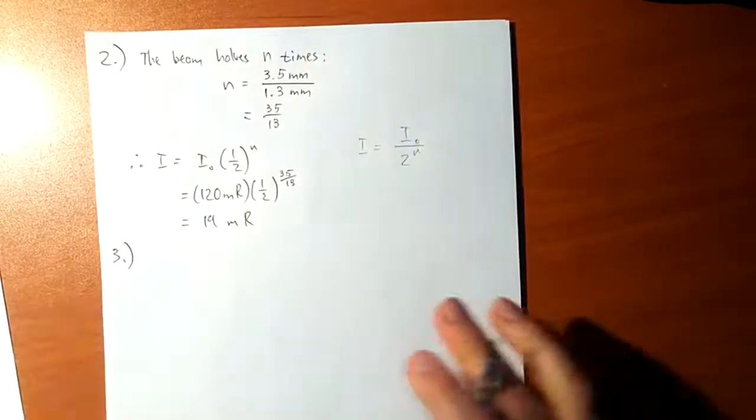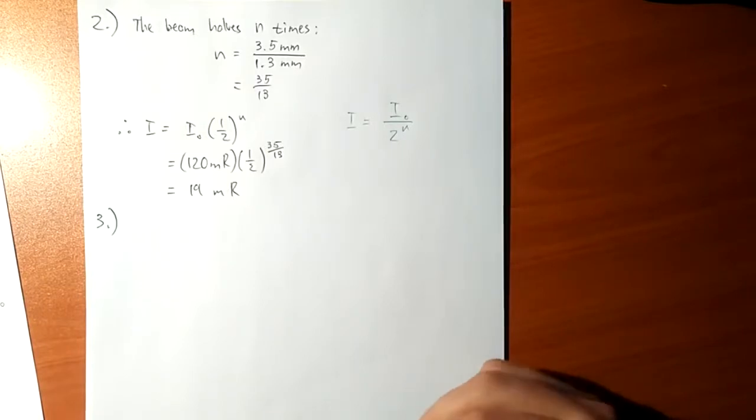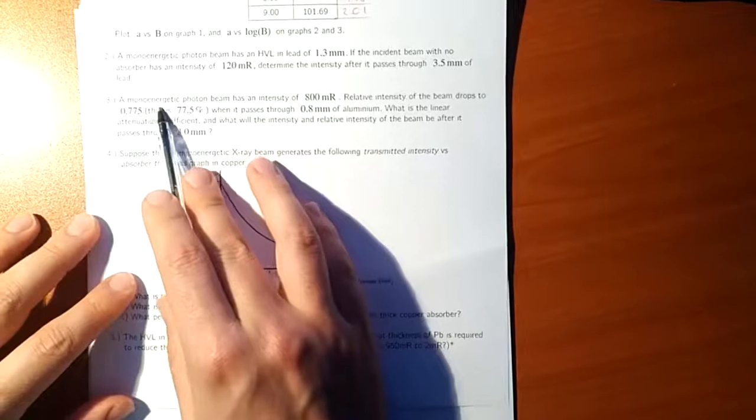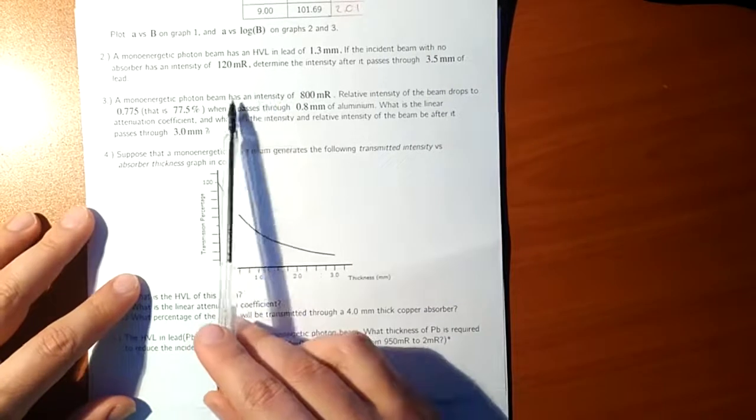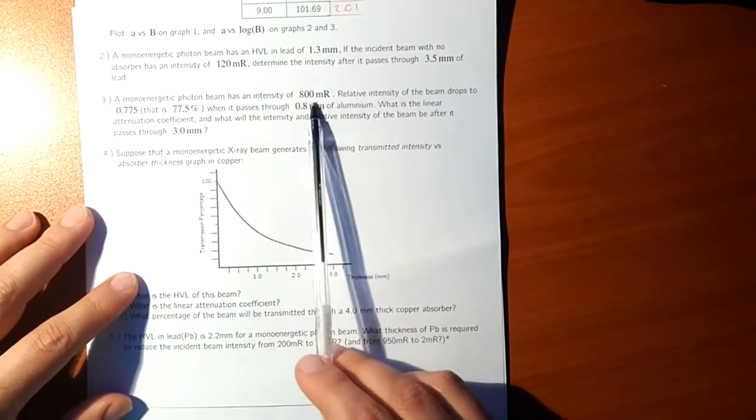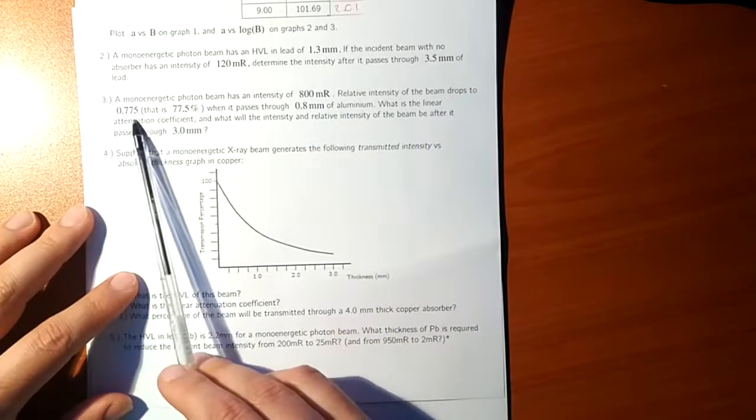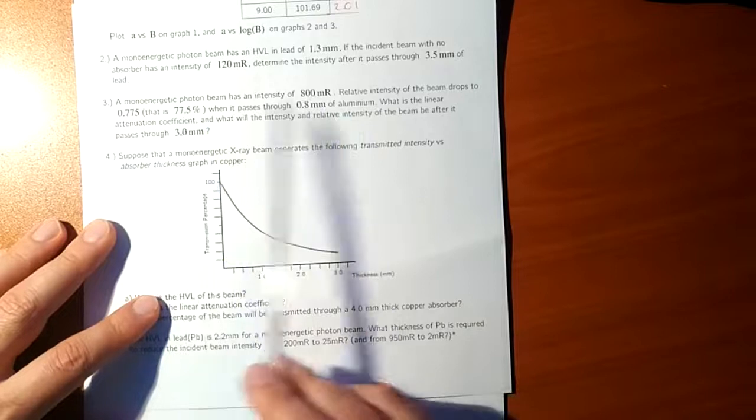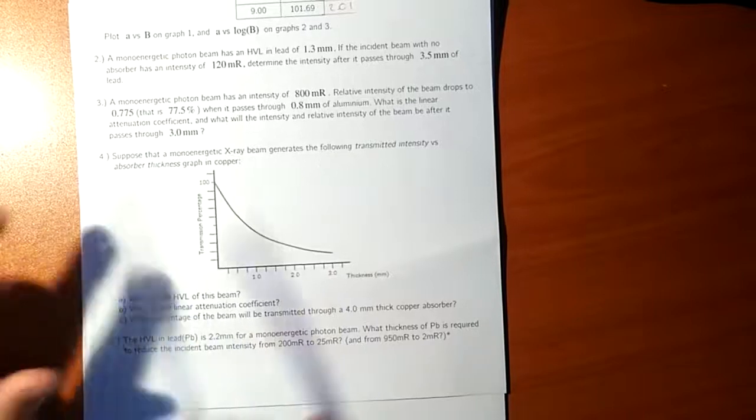Now, the next one is also very easy, but just requires a few more steps, but that's where we use the formula, the exponential relationship between the intensity of the beam and the thickness of the absorber. So we've got an energetic beam, which we'll always have for the problems that we'll be looking at. It has that intensity, the relative intensity of the beam drops to 0.775, that is 77.5% relative. Relative to what? Relative to what it was initially, in other words, 77.5% of that, and that is when it passes through 0.8 millimeters of aluminum. What is the linear attenuation coefficient, and what intensity and the relative intensity of the beam after it passes through?